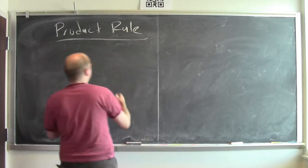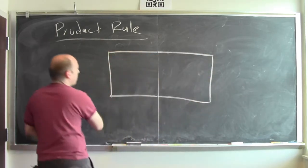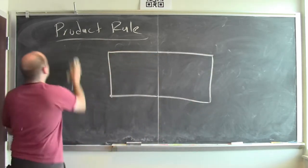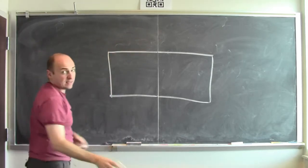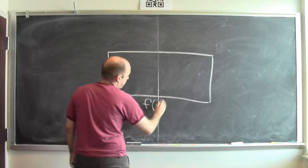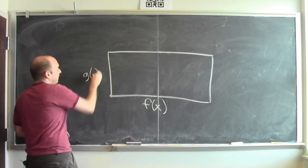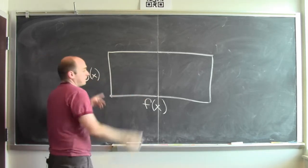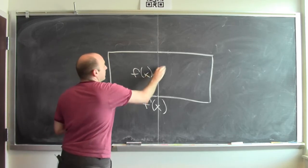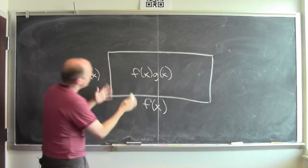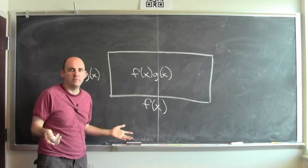I'll draw a big rectangle. The width of this rectangle will be f of x, and the height of this rectangle will be g of x. The area of this rectangle is its width times its height, which is f of x times g of x. And now I want to know: how does this product change when x changes? That's what the derivative measures.